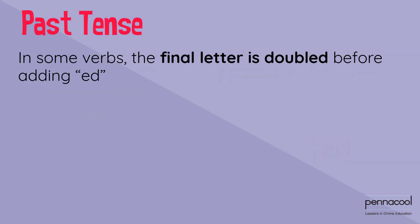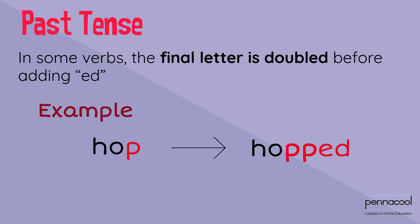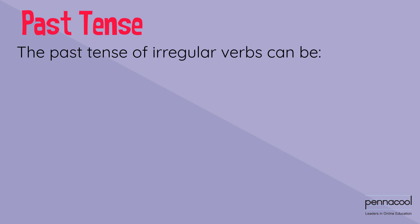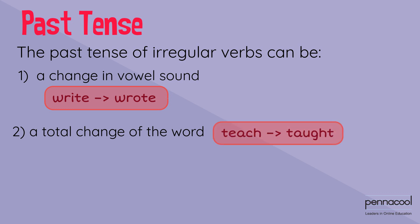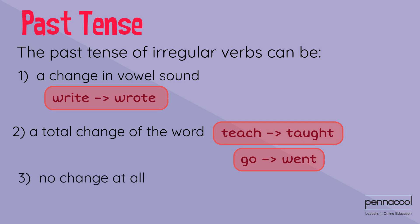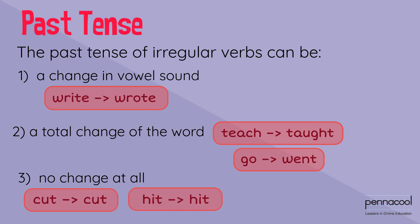In some verbs, the final letter is doubled before adding 'ed.' The past tense of irregular verbs can be: 1. A change in vowel sound — for example, write to wrote. 2. A total change of the word — for example, teach to taught, or go to went. Or 3. No change at all — for example, cut to cut, or hit to hit.